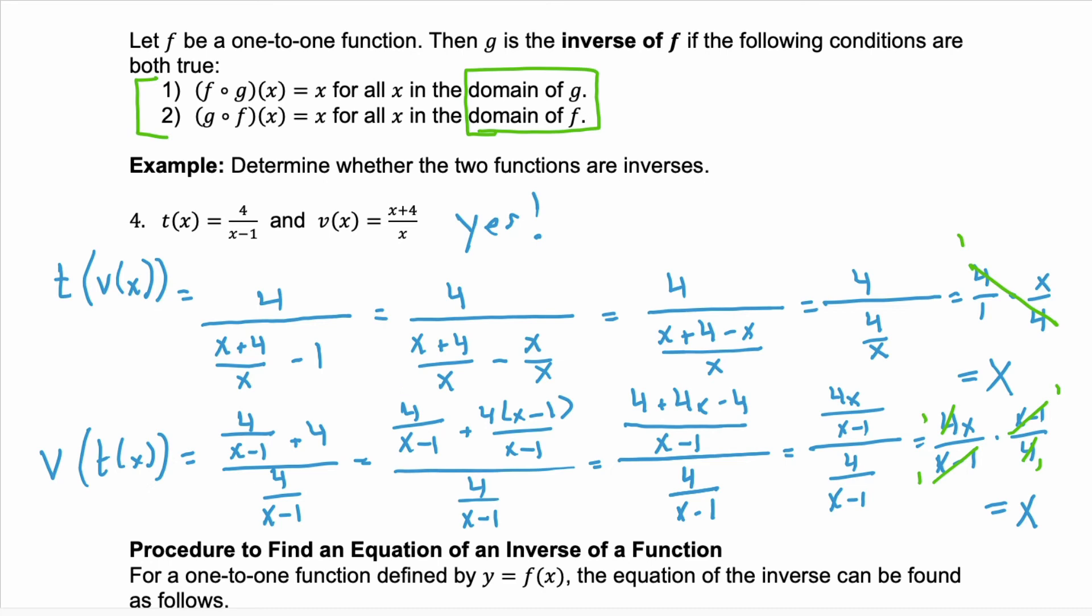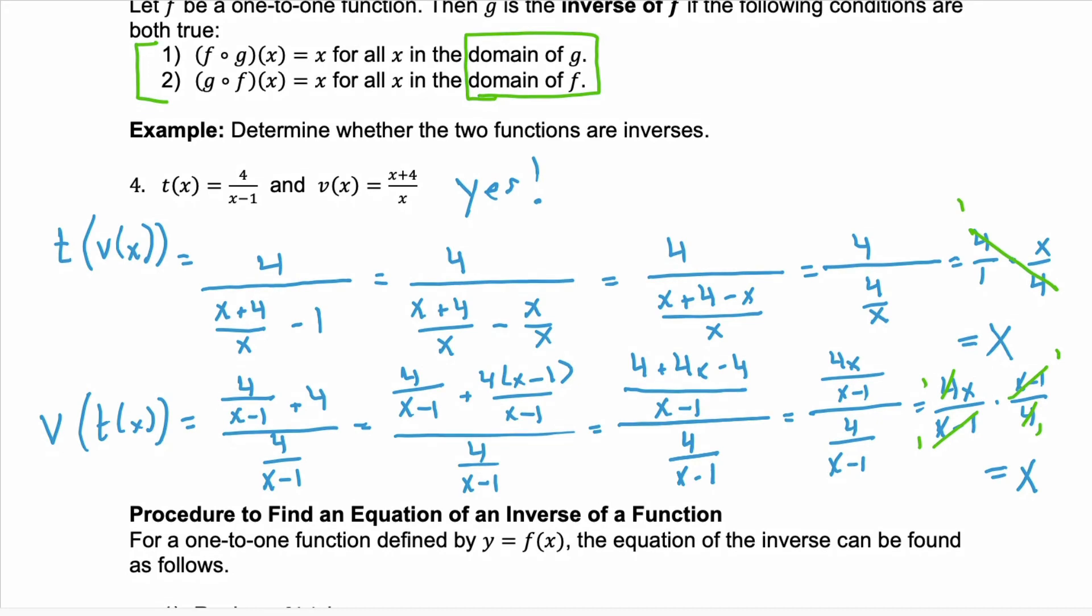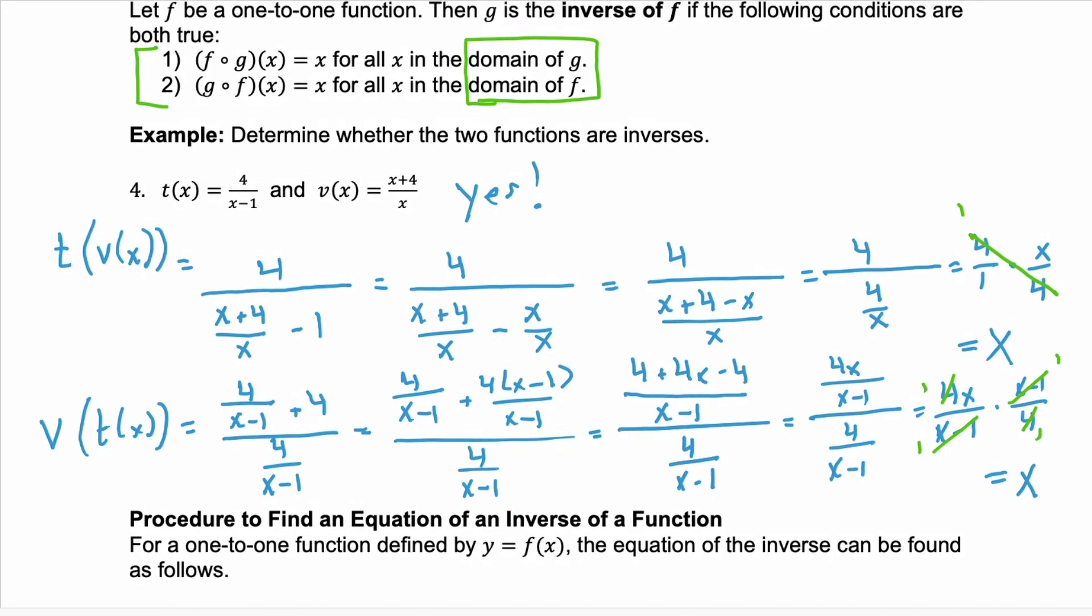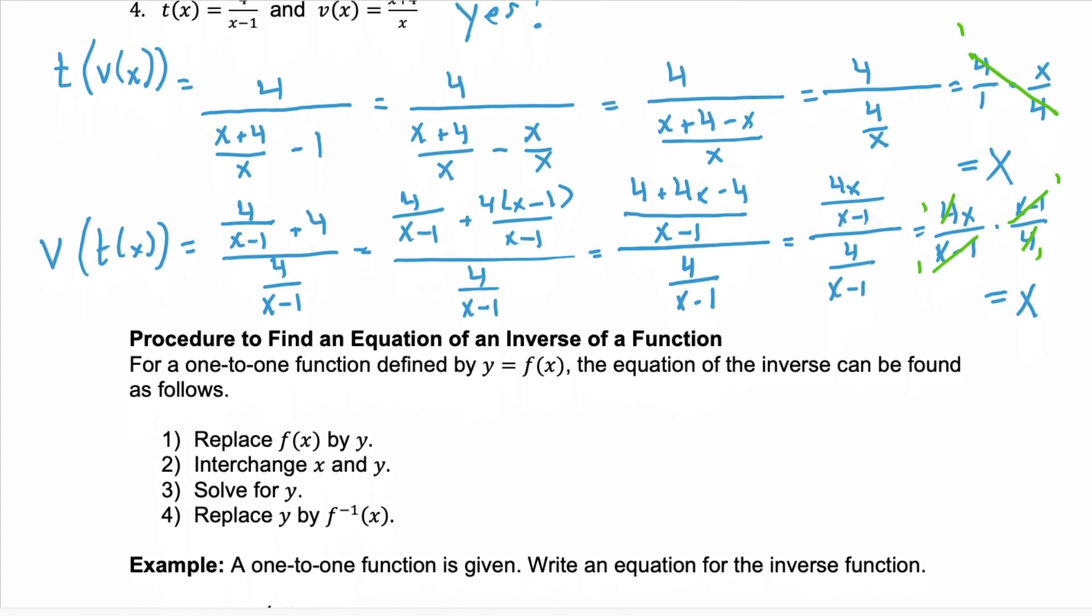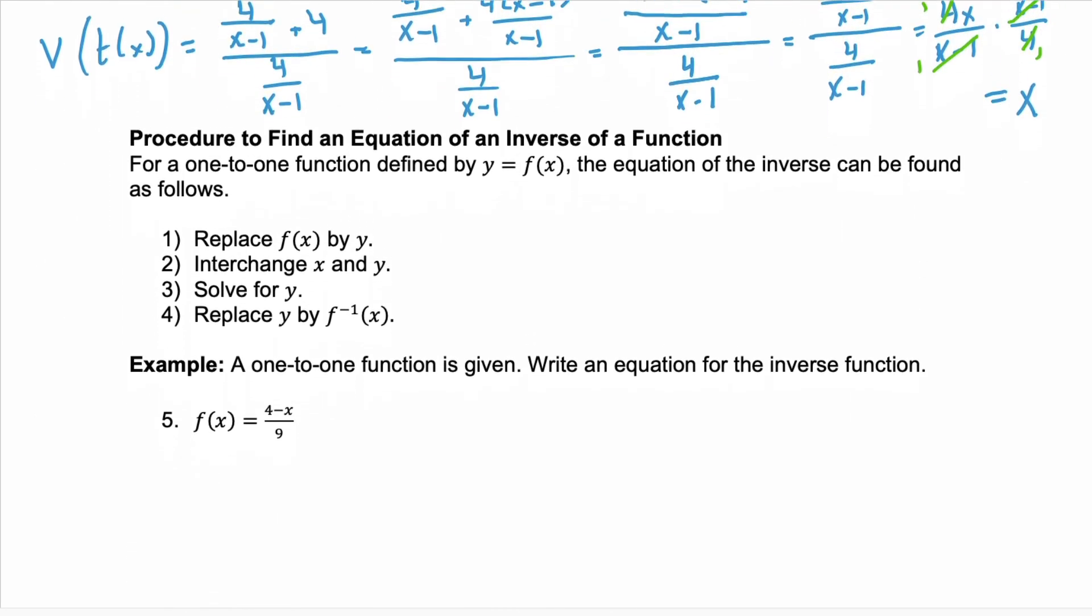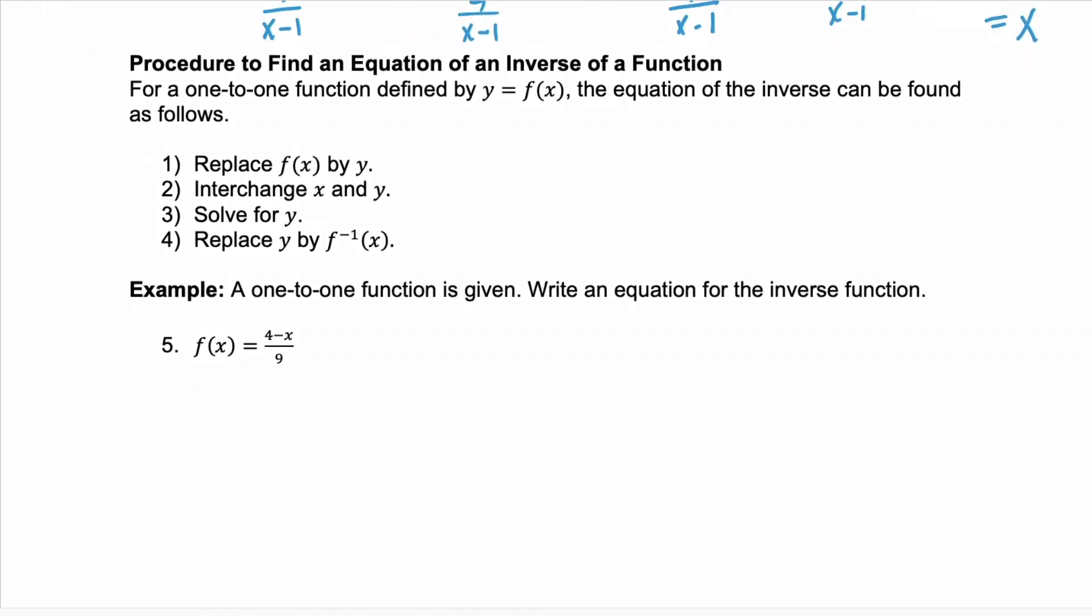Now, what if you're given a function and you've determined that it's one-to-one or you've been told that it's one-to-one and you need to find the inverse? Well, there's four steps that you follow to find the inverse of a function. And here are those four steps. And we'll go through those as we solve example five.